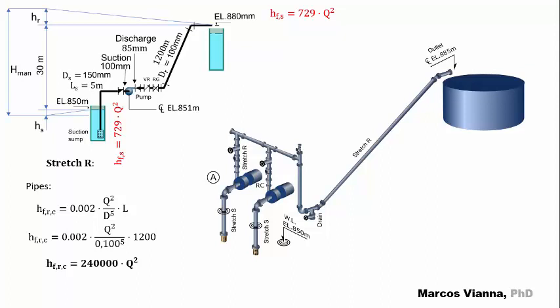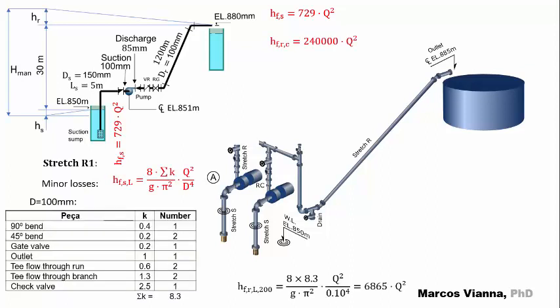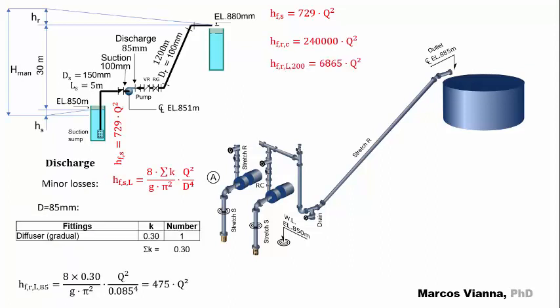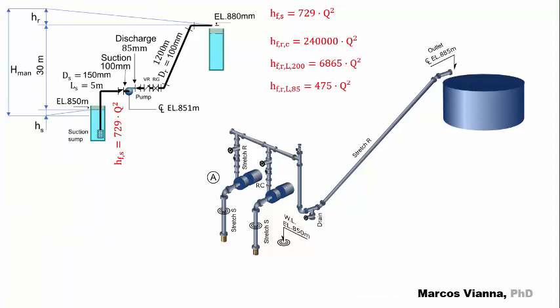Here's what we find for the pipes, for the minor losses, and for the diffuser. The expressions for the discharge losses are all there. We just have to sum them and here's what we find. We write the expressions in the figure, suction and discharge.